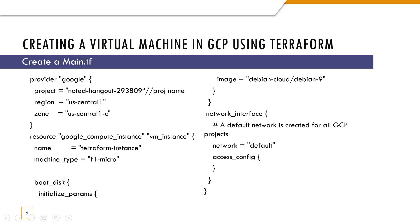After that, we will create a Terraform file called main.tf. In the main.tf, the important thing to remember is you need to first give the provider information. The provider here would be Google, and we also need to mention which project the VM should reside in — I've mentioned the project as 'noted-hangout'. And similarly, the region and zone as well.